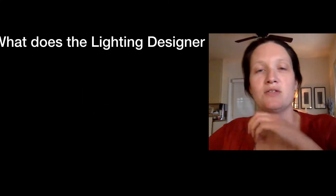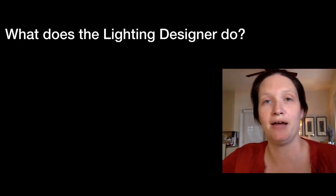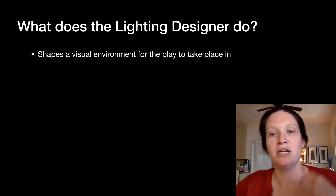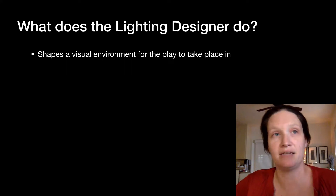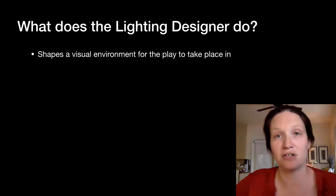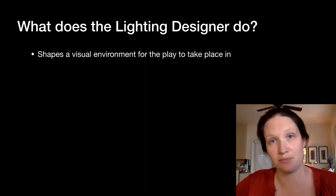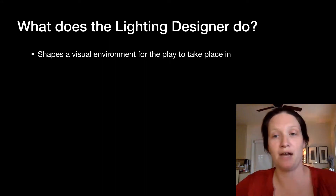Step one: what does the lighting designer do? Who is this person? One of the things we do is shaping a visual environment for the play to take place in. This can be for any sort of theatrical event — a concert, a dance project. So we're shaping a visual environment.